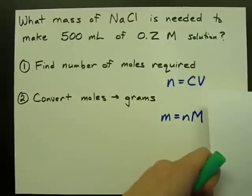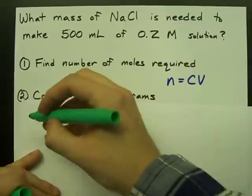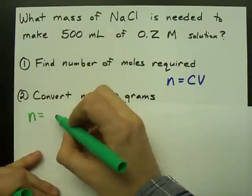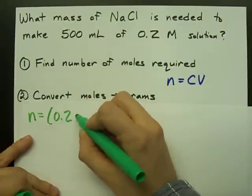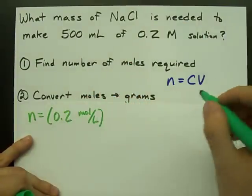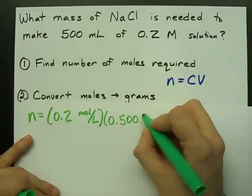Find the number of moles required. n equals CV. So the number of moles is the concentration, 0.2 moles per liter, times the volume needed, 0.5 liters.